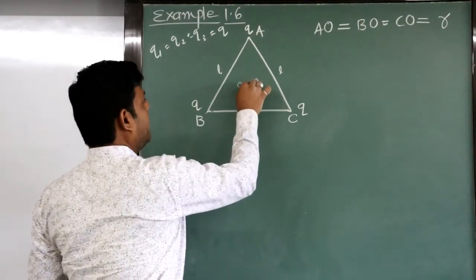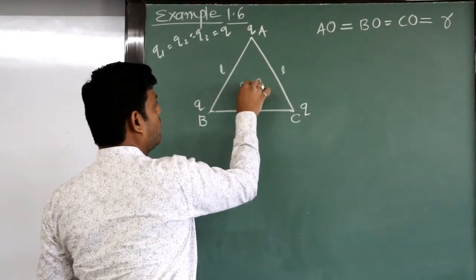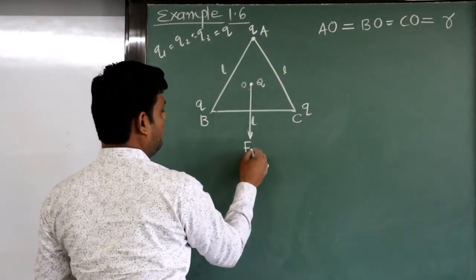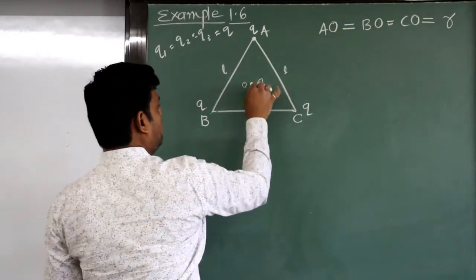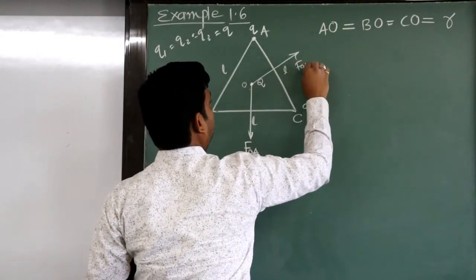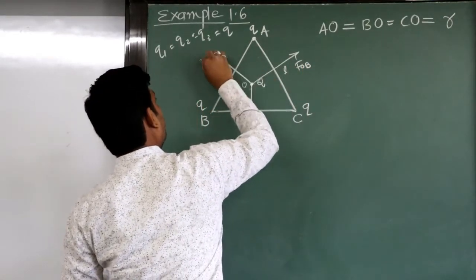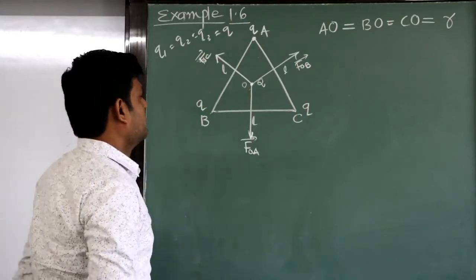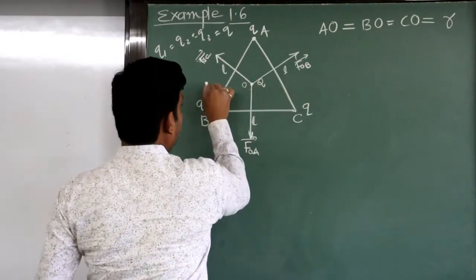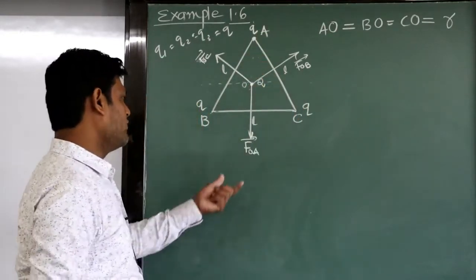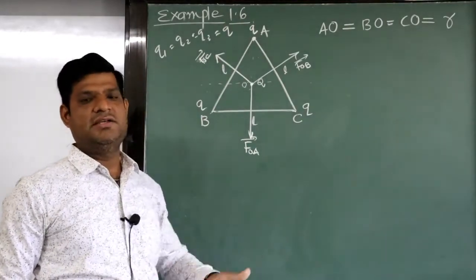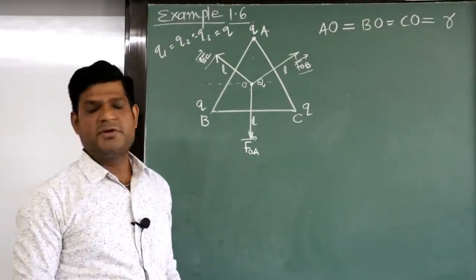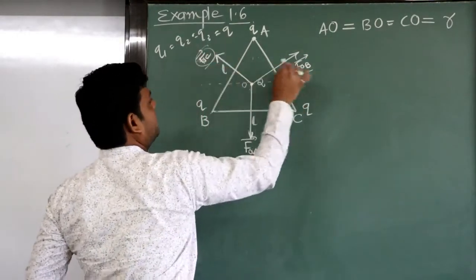The force acting on O due to vertex A is denoted FOA. The force acting on O due to B is FOB. The force acting on O due to C is FOC — these are all vectors. Taking O as the origin, with x and y axes, FOA is along the y-axis, while FOB and FOC are not on the x or y axis, so we need to calculate their components.